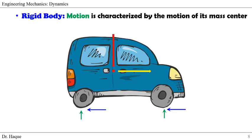Finally, for a rigid body, the motion is characterized by the motion of its mass center. Though the size or shape of the car is not uniform, we take the entire body's rigid body motion as the motion of its mass center. That is why in previous slides we had F equals MAG, where G means acceleration about the mass center.